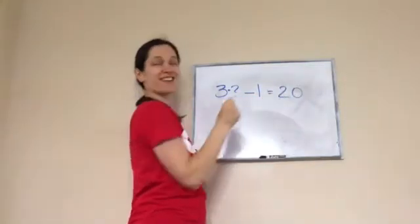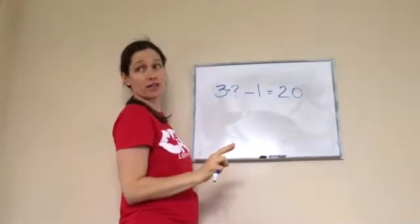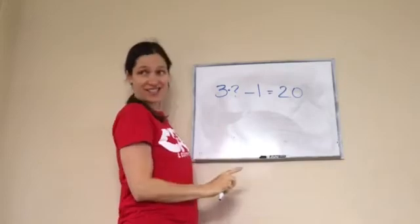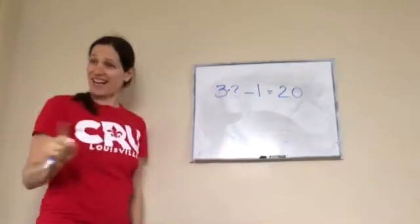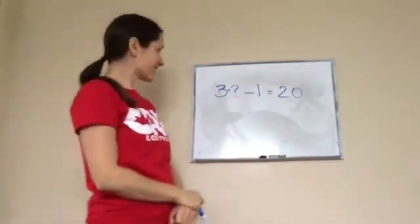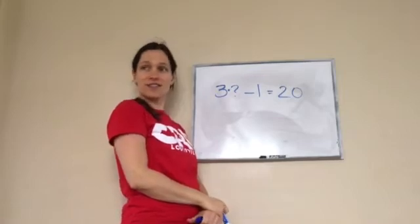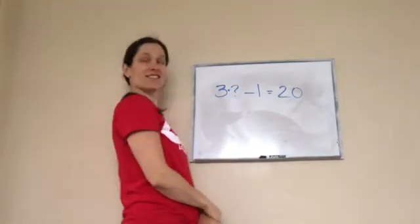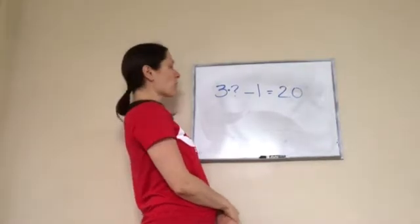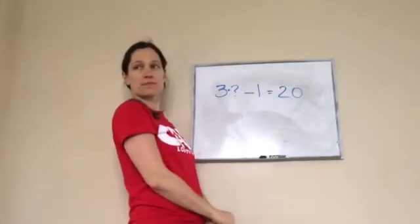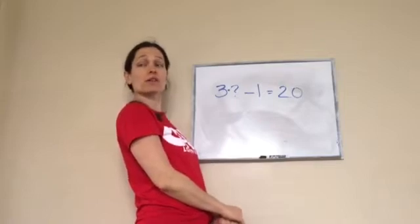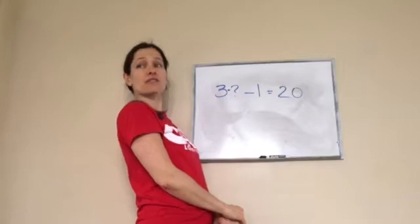I'm going to teach you a trick. So it has to be 3 times what equals 21. How did you do that? Because 21 minus 1 is 20. So what would the question mark be if 3 times what equals 21? I don't know. Oh, 7, right? Very good.